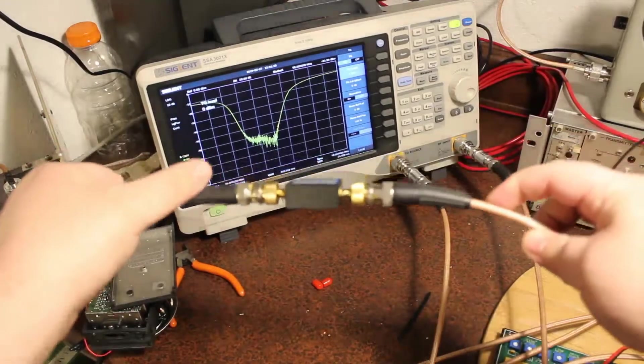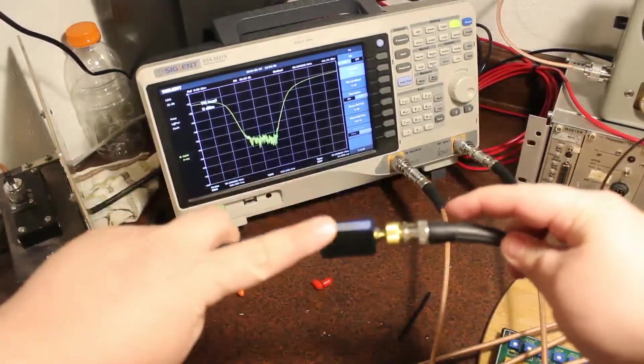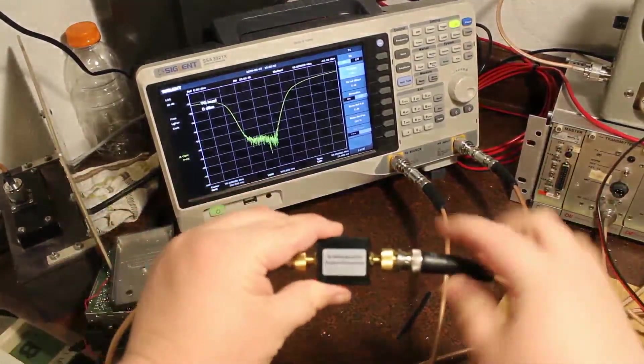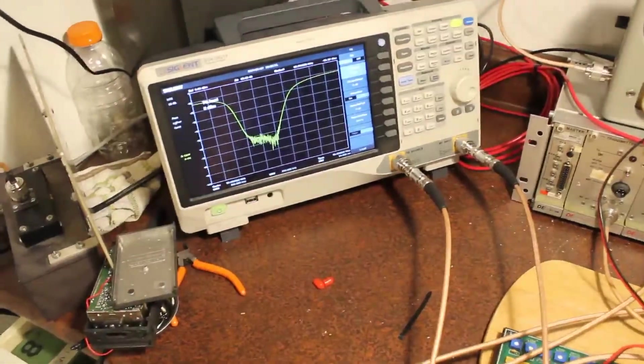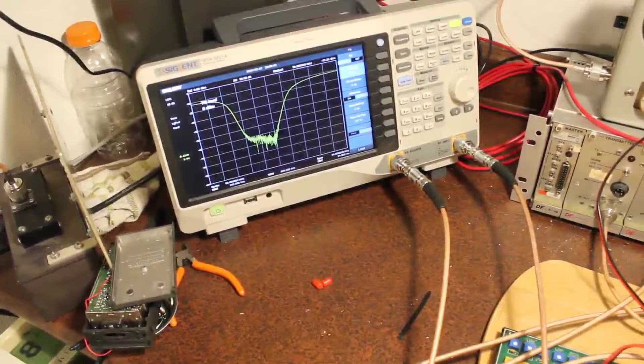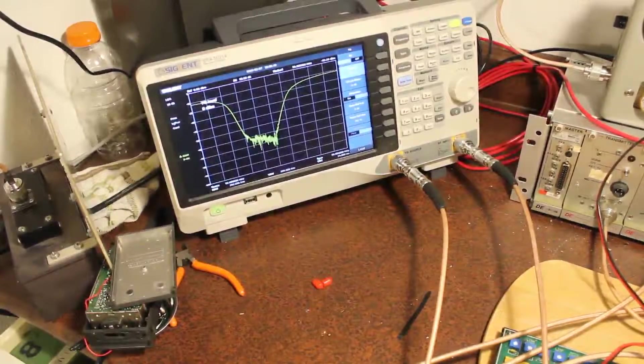So what I've done is I've got tracking generator in, tracking generator out, and the filter. Because it's an RF filter, it's non-directional, or at least most are not. So let's take a look at what the spectrum analyzer is showing here.